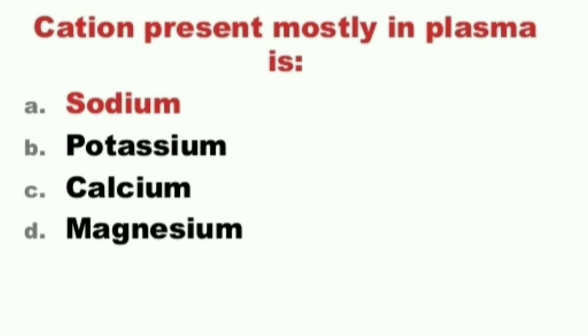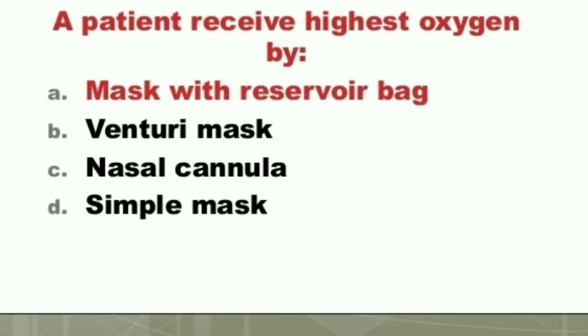Next question: The cation present mostly in plasma is: A) Sodium, B) Potassium, C) Calcium, D) Magnesium. The answer is A) Sodium. The cation present mostly in plasma is sodium.